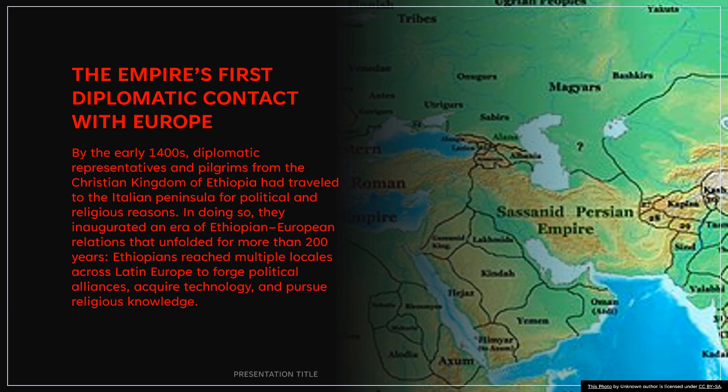Ethiopia's empire had its first diplomatic contact with Europe by the early 1400s. Diplomatic representatives and pilgrims from the Christian kingdom of Ethiopia had traveled to the Italian peninsula for political and religious reasons. In doing so, they inaugurated an era of Ethiopian-European relations that unfolded for more than 200 years. Ethiopians reached multiple locales across Latin Europe to forge political alliances, acquire technology, and pursue religious knowledge.